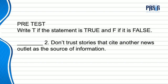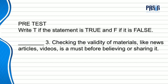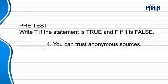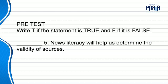Number two: don't trust stories that cite another news outlet as the source of information. The answer is true. Number three: checking the validity of materials like news articles and videos is a must before believing or sharing them. The answer is true. Number four: you can trust anonymous sources. The answer is false. Number five: news literacy will help us determine the validity of sources. The answer is true.